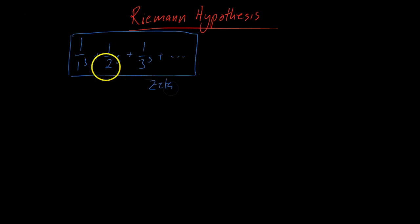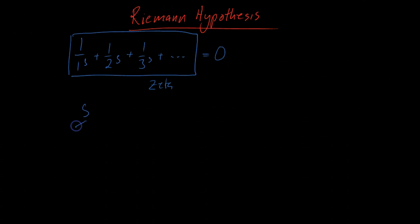For what values of s will this whole thing — the zeta function — become equal to zero? Now there's a complication: s is not just an ordinary number. S is something called a complex number, and a complex number consists of two parts: a real part and an imaginary part.